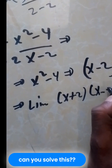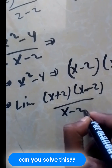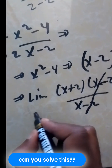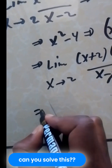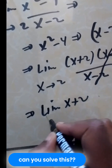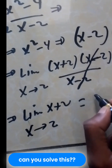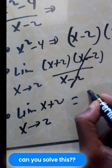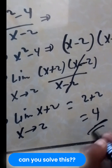So after factorizing, we have (x + 2)(x - 2) over (x - 2). The (x - 2) terms cancel each other, so the limit reduces to finding the limit of (x + 2) as x tends to 2. Using direct substitution, it will be 2 + 2, which is 4.